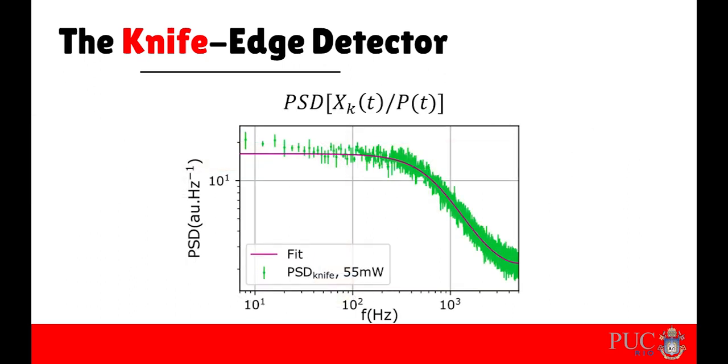Then, if we divide XK by P, we get the PSE we expect with the right corner frequency.